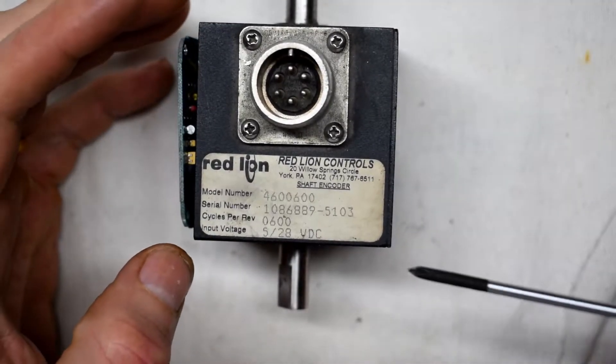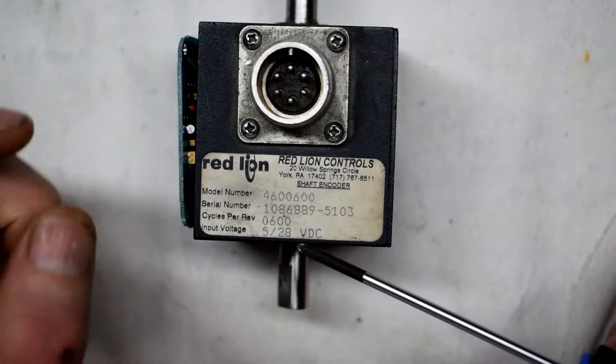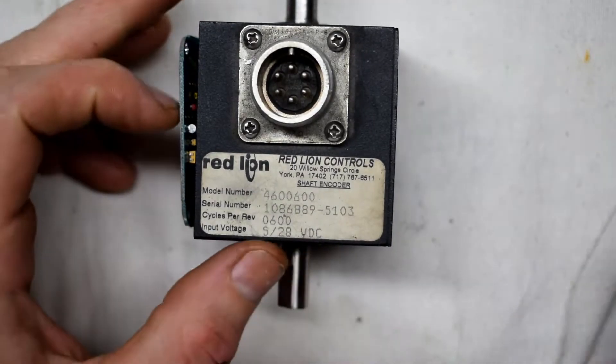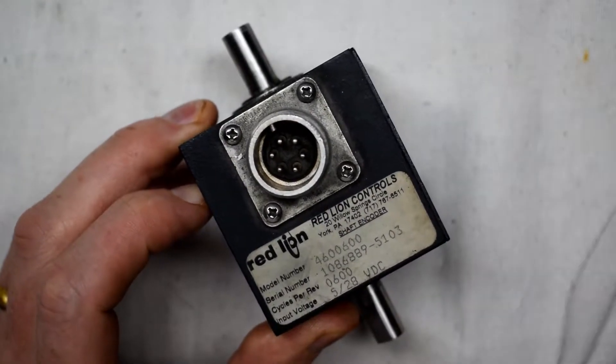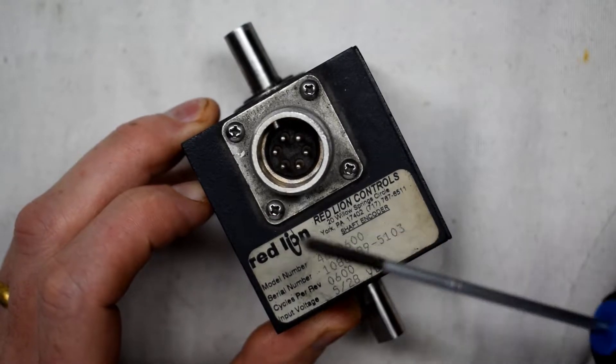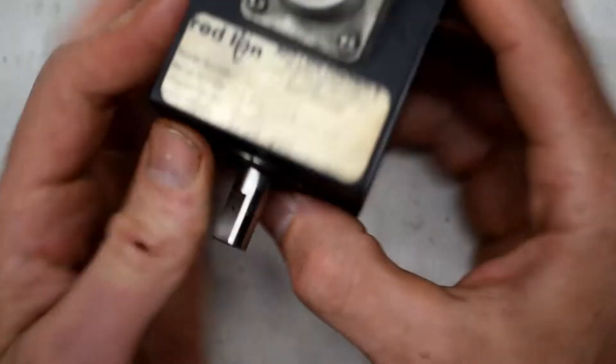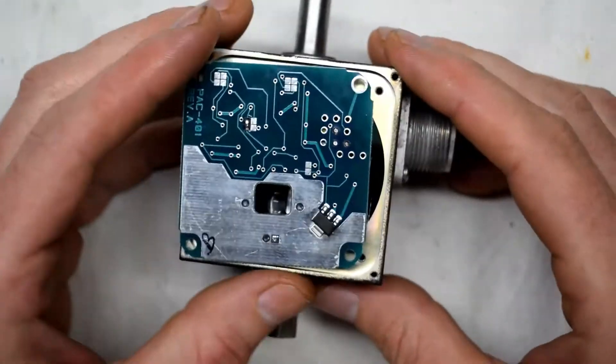So here I have a shaft encoder by Red Lion, and what happens is as the shaft spins it outputs a square wave on one of these pins. There are a couple screws on two sides of this and there's this little black thing here, so what you want to do is take off those screws.